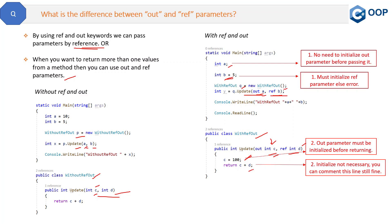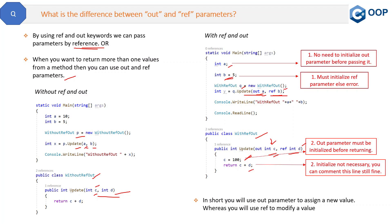In short, the out parameter is used to assign a new value, and the ref parameter is used to modify an existing value. Let me show you the same thing in Visual Studio Code as well.